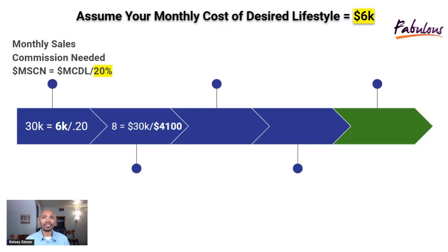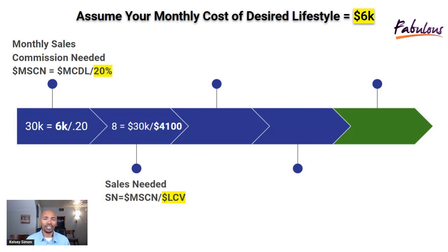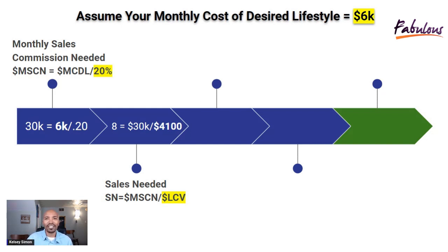The next thing we need to know, which is our second formula, is how many sales do we need. The sales that we need is going to be calculated by taking the monthly sales commission needed — the MSCN — and dividing that by the LCV, which is the lifetime customer value. The value of this formula is it's going to tell us how many sales we need to produce in order to give us the sales commission we need so that we can have the cash flow to cover the cost of our desired lifestyle. So we're going to take that $30,000, which is the sales commission we need every month, and divide it by that lifetime customer value.